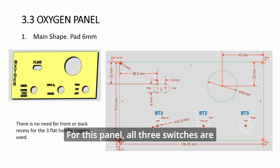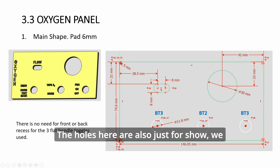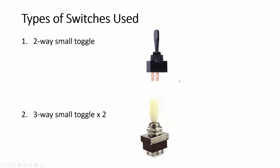For this panel, all three switches are toggles as shown here, three-way, two-way, three-way and there are no recesses required for this. The holes here are also just for show, we are not building any gauges. So I'm using the simple flat handle toggles but the big one, big plastic ones. This is a three-way and this is a two-way. No recesses required for this.